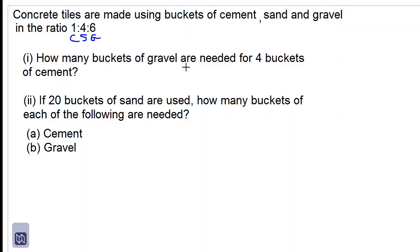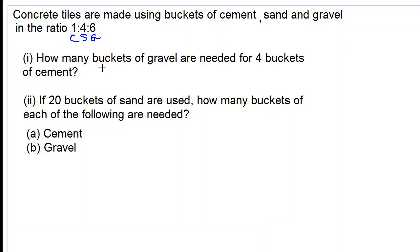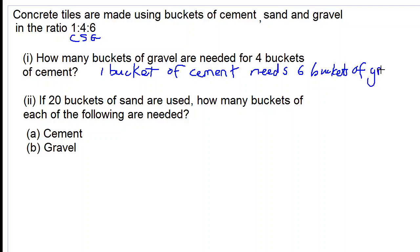So how many buckets of gravel are needed for four buckets of cement? One bucket of cement — because 1 pertains to cement — needs six buckets of gravel. So one bucket of cement needs six buckets of gravel.